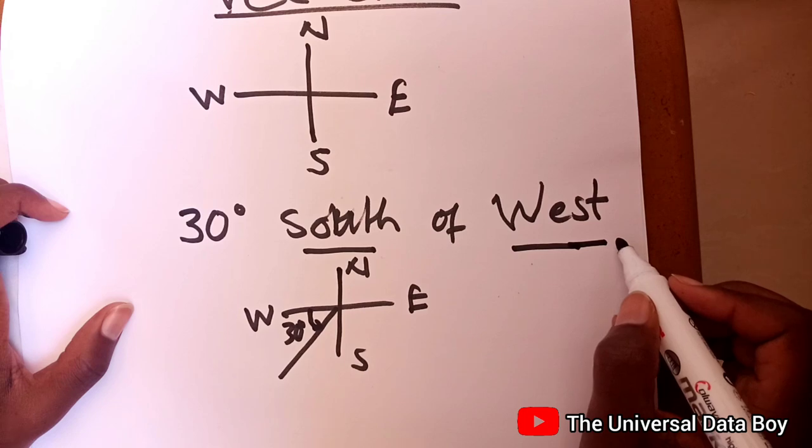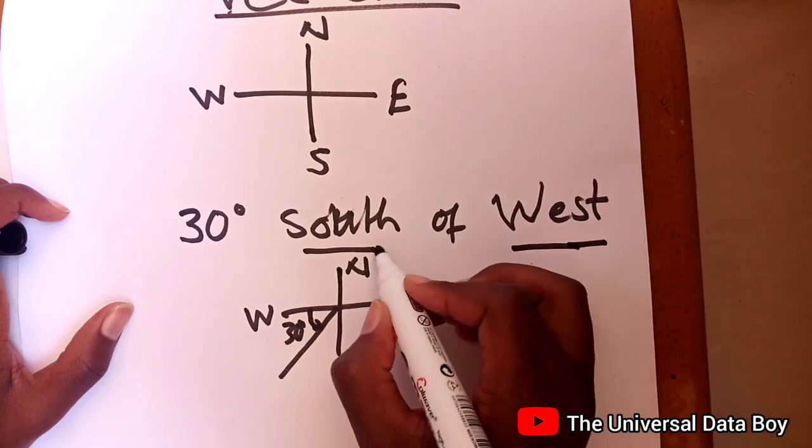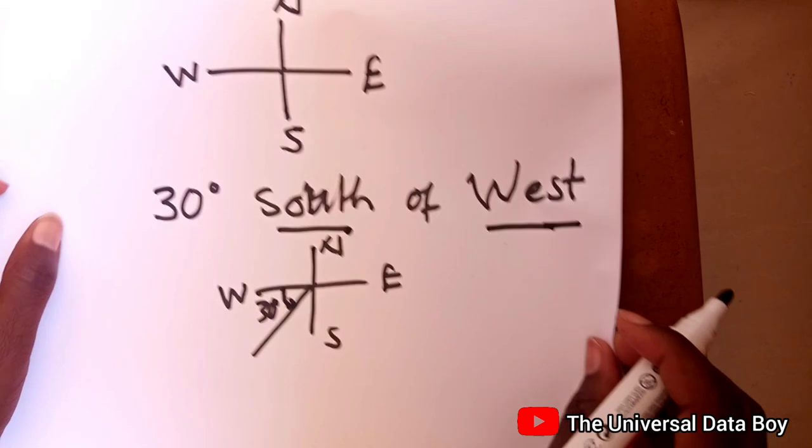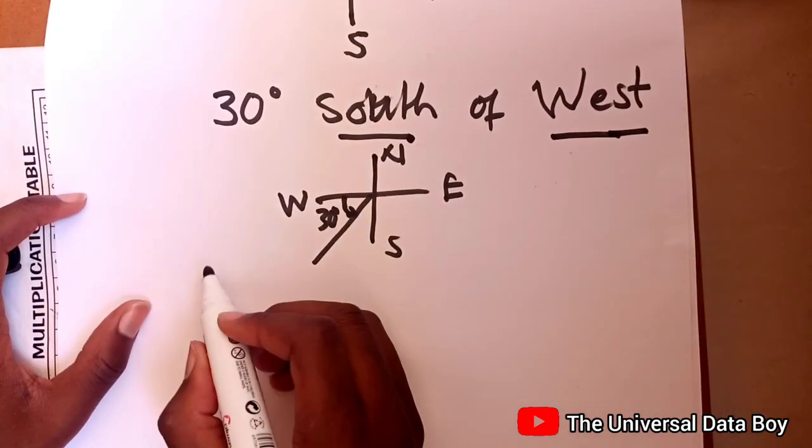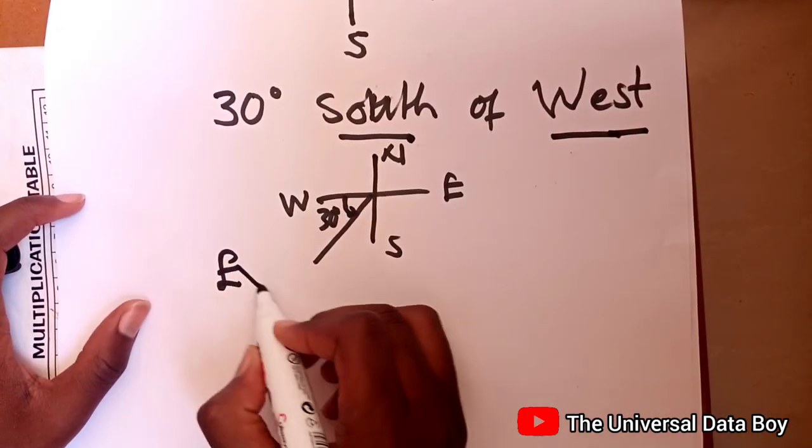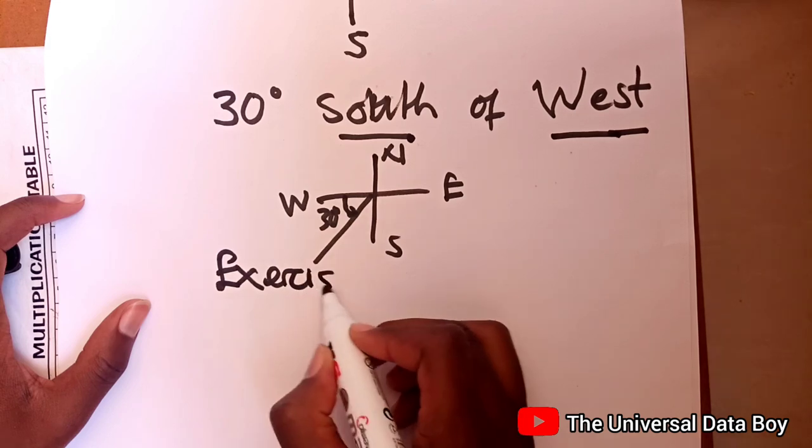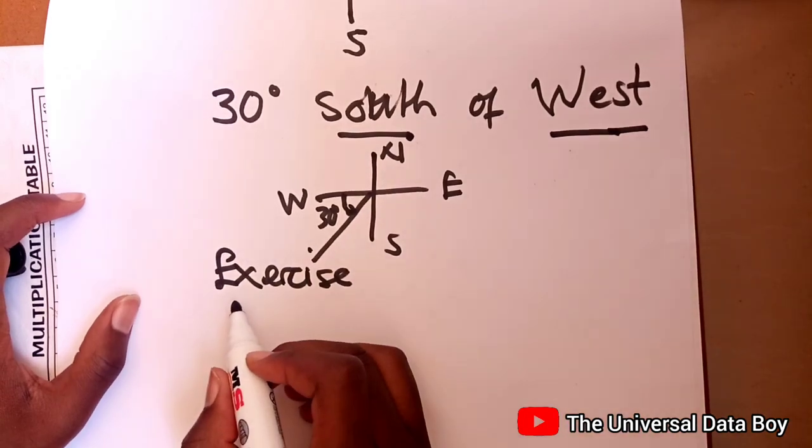The second cardinal direction is where it's starting from. The first one is where it's going to. So let me give you an exercise that you can try to do on your own and you can check out how it comes out.